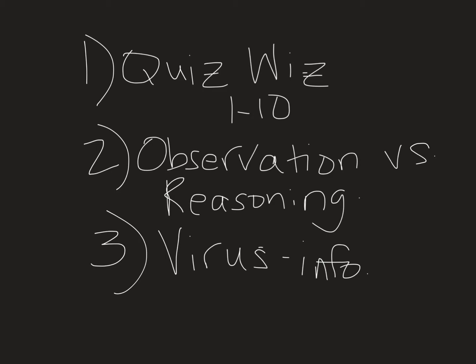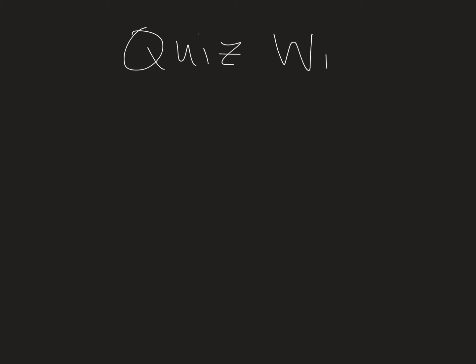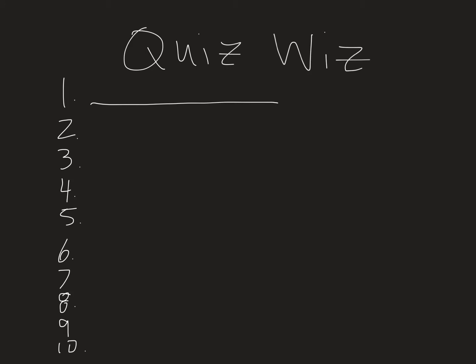All right, so we're going to get started. The first thing we're going to do is the quiz whiz. Take out that piece of paper that says 1 through 10. I'm going to write that down — quiz whiz, 1 through 10. I'm going to ask you 10 questions. Let's start with the first questions being about the characteristics of life. I gave you a saying for the seven main characteristics of life — do you remember what that saying is?